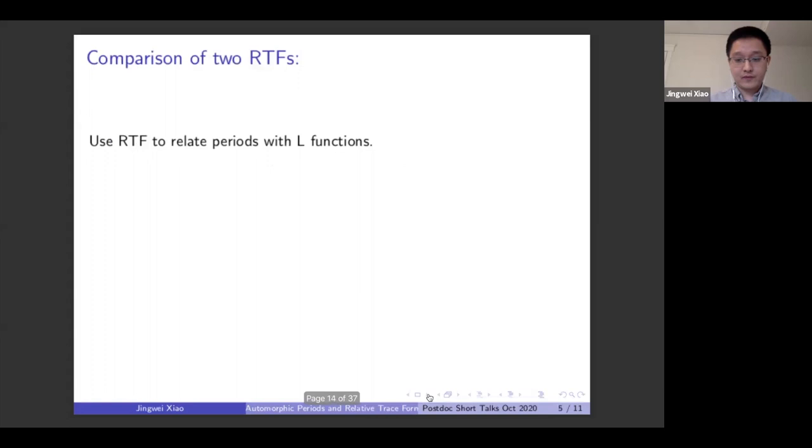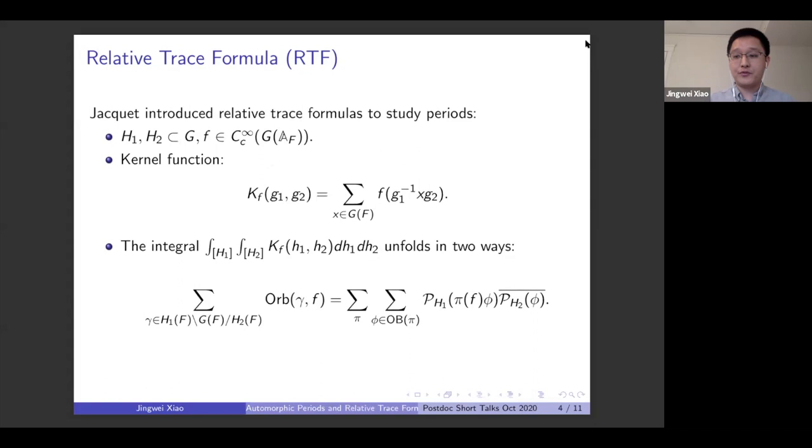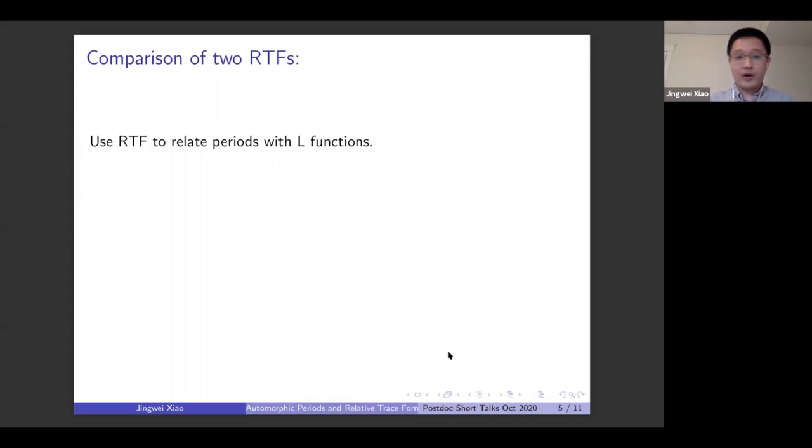So you want to put some restrictions so that the periods would actually have some reasonable meaning. So the strategy of using those relative trace formulas is usually done by some kind of comparisons, where you have several relative trace formulas and do the comparison. The strategy is usually the following.